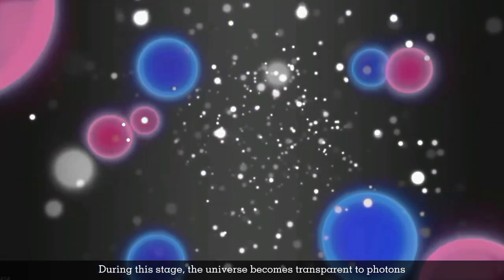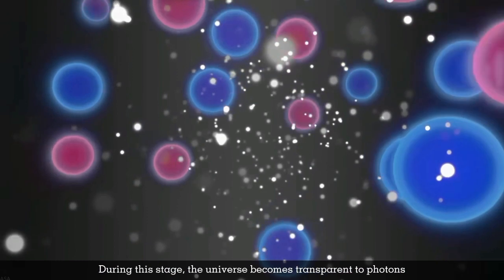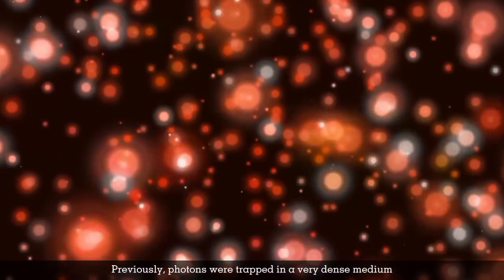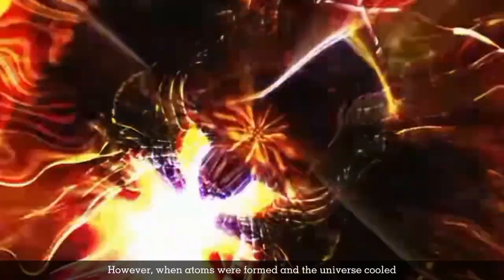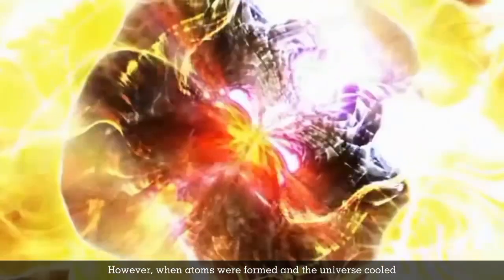During this stage, the universe becomes transparent to photons. Previously, photons were trapped in a very dense medium, so they couldn't travel far without interacting. However, when atoms were formed and the universe cooled, photons could freely move around without constant interaction with matter.